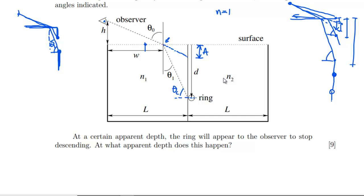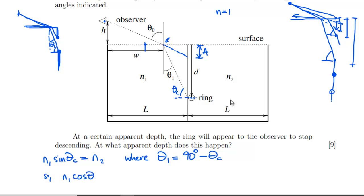At that critical angle, we're going to have n1 sin(θc) = n2, because that's what happens with critical angles. And θ1 = 90° − θc, so θc = 90° − θ1. Substituting in: n1 cos(θ1) = n2. We can also say from Snell's law that sin(θ0) = n1 sin(θ1), since we don't need the n for air because n = 1.